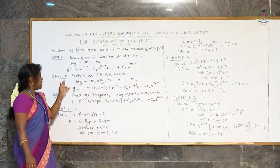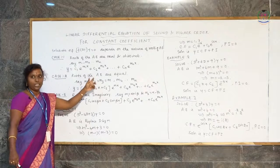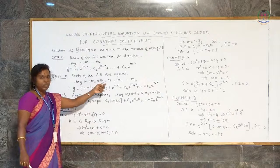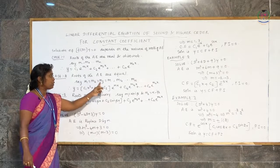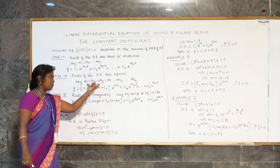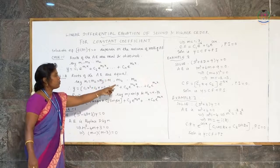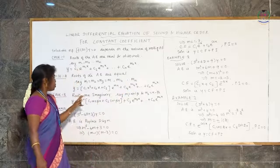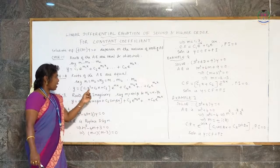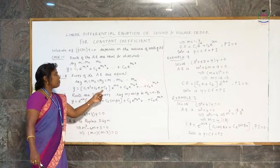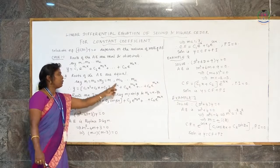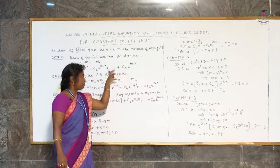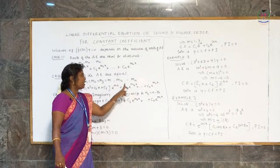Case 2: the roots of the auxiliary equation are equal. For example, if three roots are the same — m₁ equals m₂ equals m₃ equals m — the remaining roots go from m₄ up to mₙ. The solution is written as (c₁x² plus c₂x plus c₃)e^(mx), with remaining distinct roots written as in Case 1.